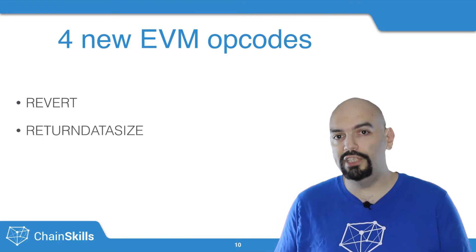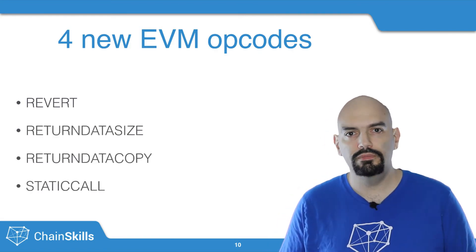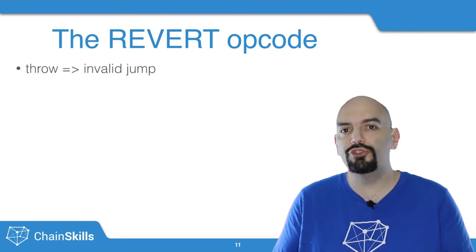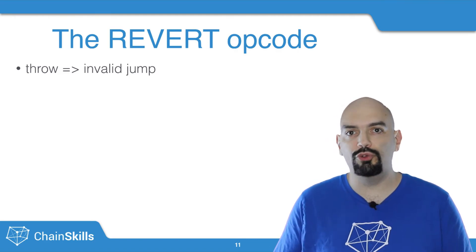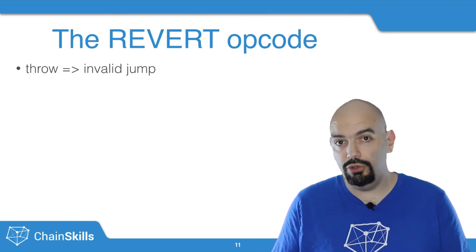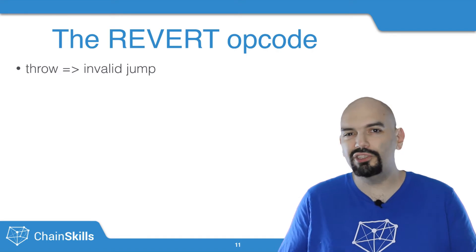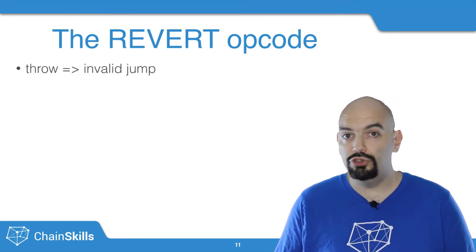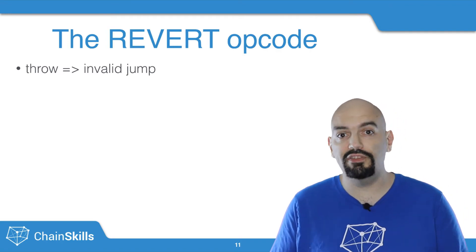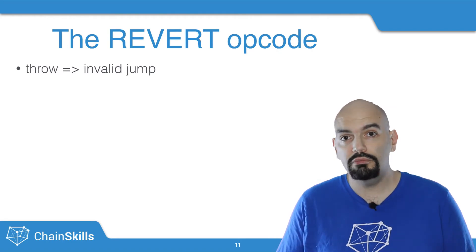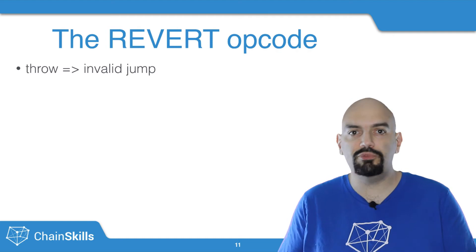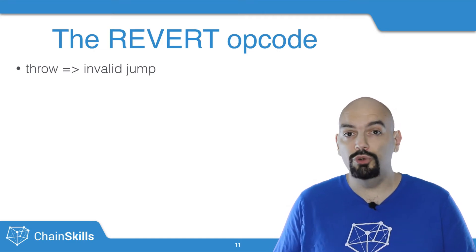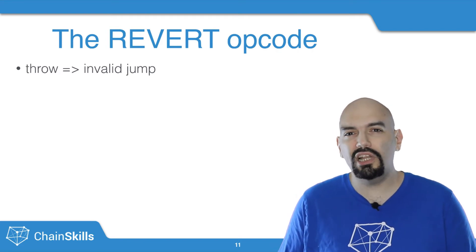The four new opcodes are called Revert, Return Data Size, Return Data Copy, and Static Call. The first three are a big improvement in terms of error handling in smart contracts. Originally, when you had an error in a smart contract, you used the throw instruction, which reverted all state changes and consumed all remaining gas sent by the caller. For example, if you were participating in an ICO and sent ether with a very high gas price to be prioritized, but the network slowed down and your transaction didn't get processed in time, the contract execution would throw and consume all the gas you sent. So not only did you not get your tokens, but you also lost money in the form of gas. In recent months, with all the craziness around ICOs, some people lost several thousands of dollars each that way.